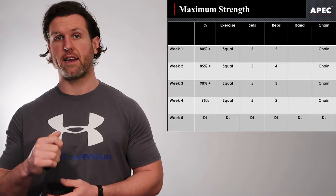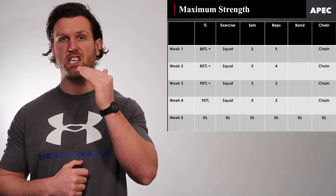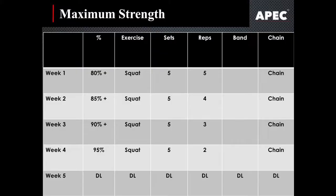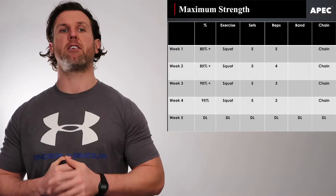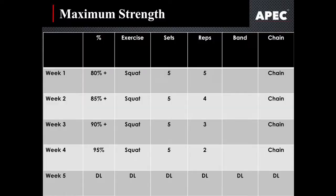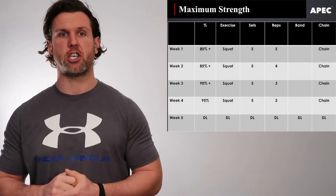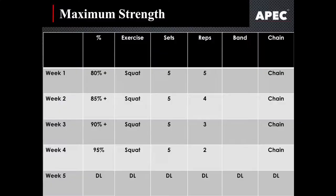Week 3: 90-plus percent, so we're really heading for top-end max strength. The exercise stays as the squat, 5 sets, down to 3 repetitions, training tool still chain. Week 4: 95%, really top-end max strength, squat, 5 sets, down to 2 repetitions, training tool again chain. Week 5, we apply the download week where we change the training stimulus, and in week 6 we bring them back into another strength phase.